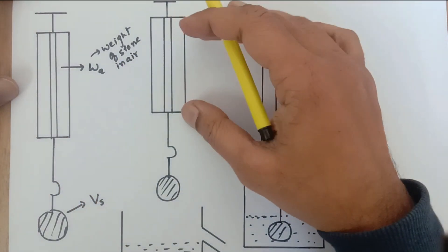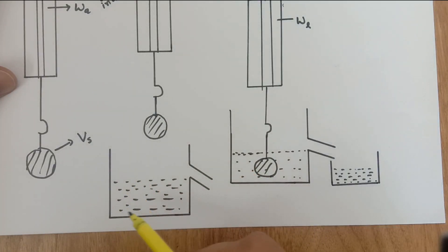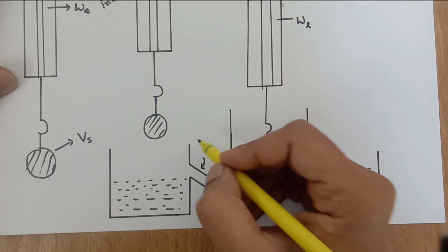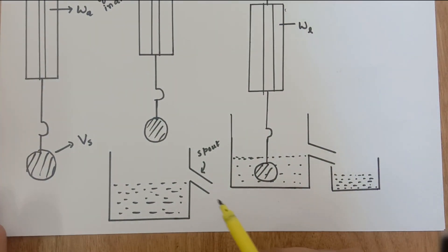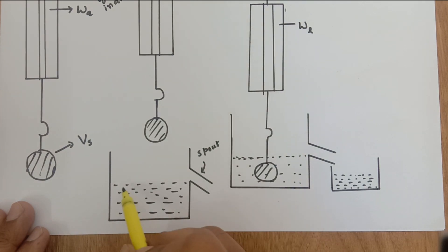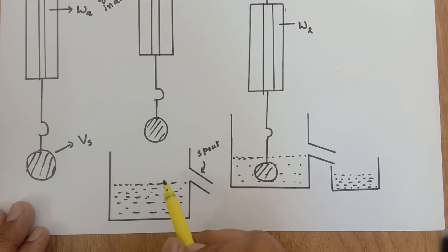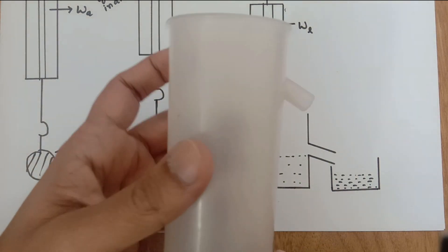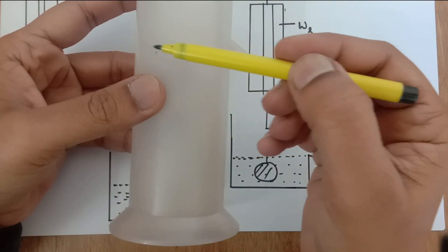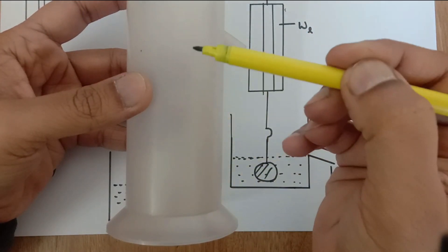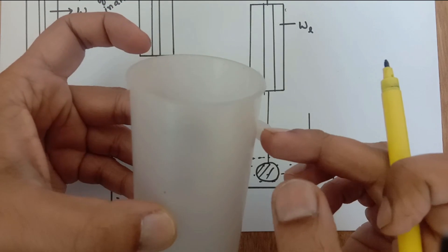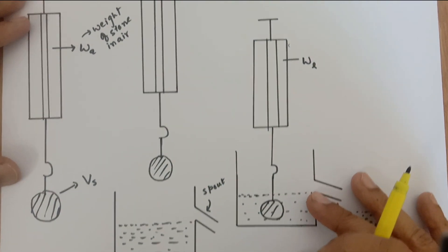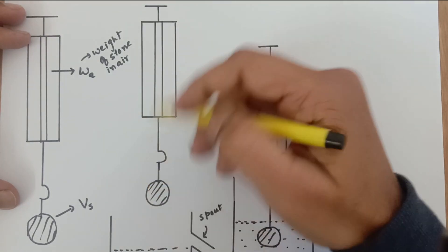Now we are going to take a Eureka can which is filled with water. This part of the Eureka can is known as the spout — it is also known as an overflow jar. You can only fill this Eureka can with any liquid up to the spout level, because if you try to put in more liquid, it overflows out. Now we are going to slowly immerse this stone inside the water.